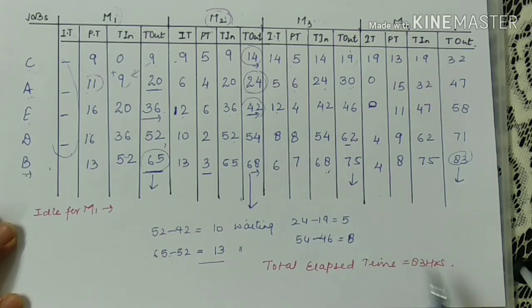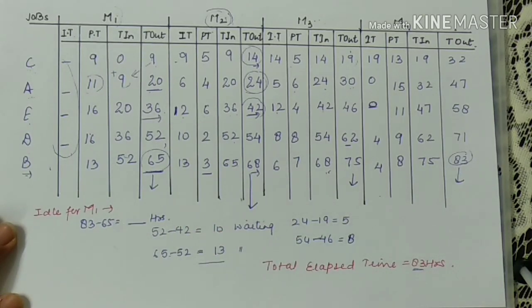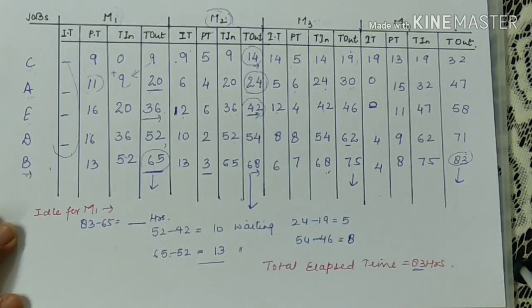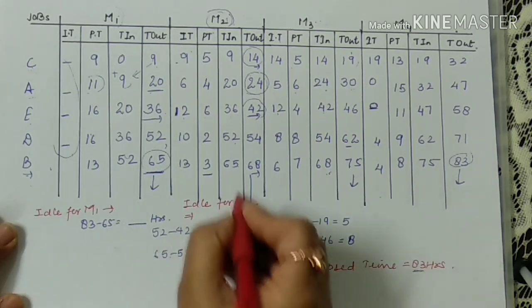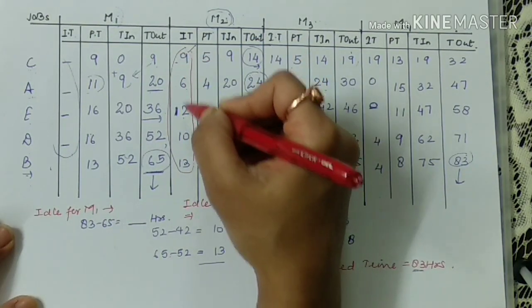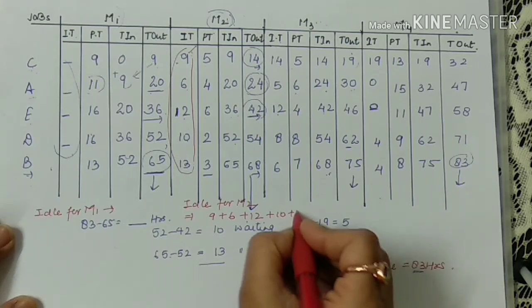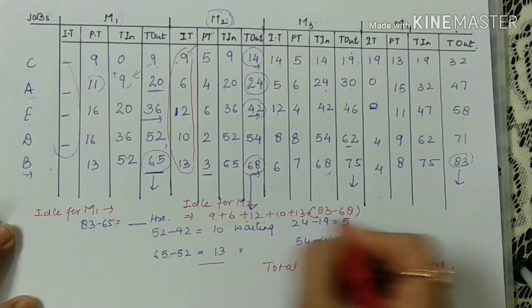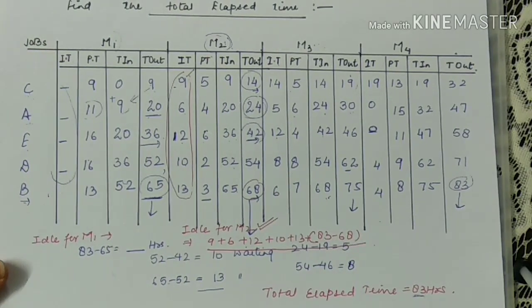If they ask for idle time: for M1, idle time = 83 minus 65 = 18 hours (waiting after finishing). For M2, idle time is the sum of all waiting periods: 9 + 6 + 12 + 10 + 13, plus (83 - 68) at the end. I have explained idle time calculation in detail in my previous videos. Please post any query in the comment box. Like, subscribe, and share the channel. Thank you.